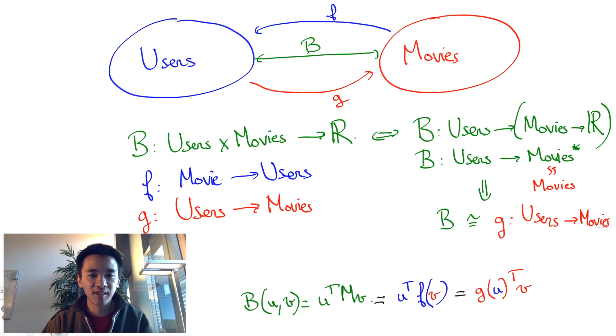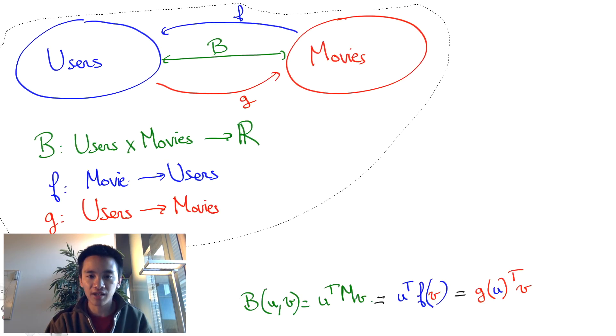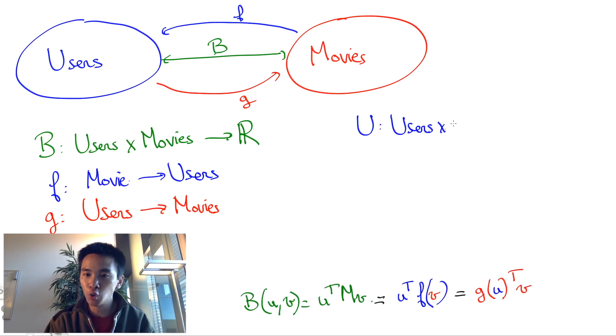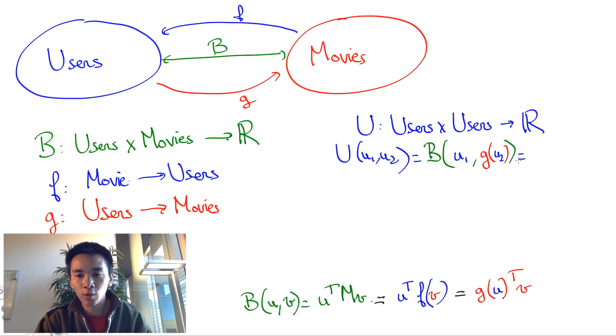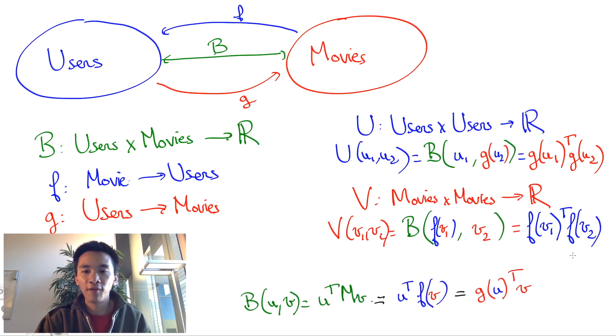Anyways, the spectral-based proof of the singular value decomposition consists in finding in each space users and movies a symmetric semi-definite positive bilinear form U and V, each defined by U of U1, U2 equals B of U1, G of U2, which is G of U1 transposed G of U2, and V of V1, V2 equals B of F of V1, V2, which equals F of V1 transposed F of V2.